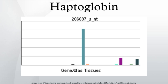It can also be ordered along with a direct antiglobulin test when a patient is suspected of having a transfusion reaction or symptoms of autoimmune hemolytic anemia. Also, it may be ordered in conjunction with a bilirubin.